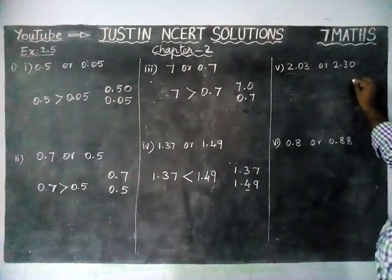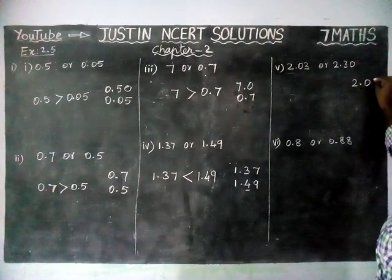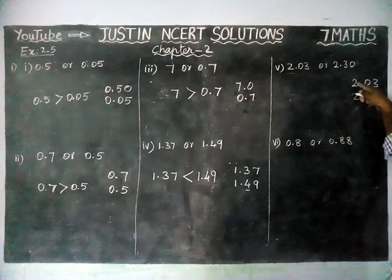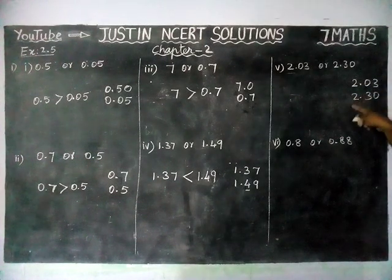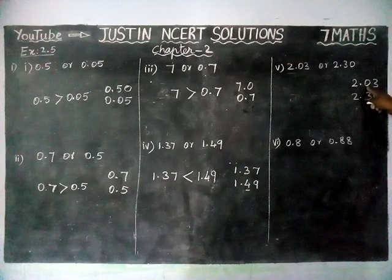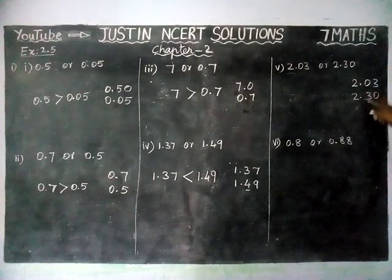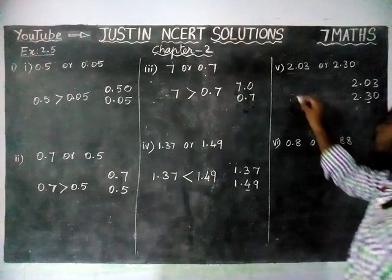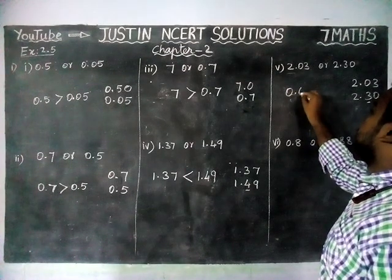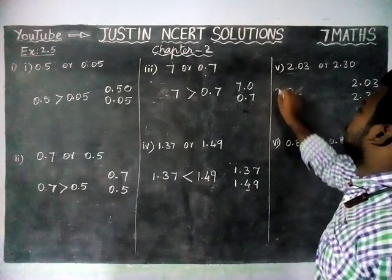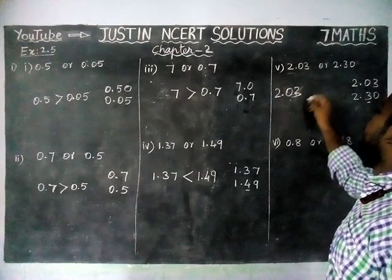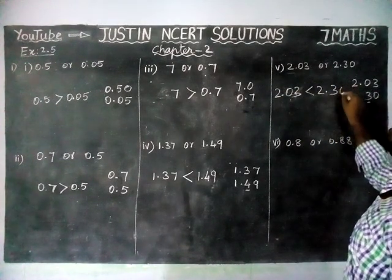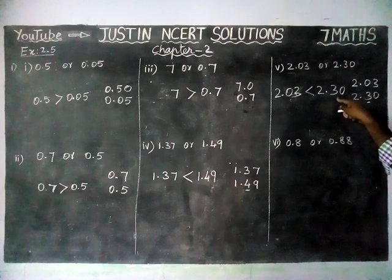Next: 2.03 and 2.30. The whole part is equal — both are 2. Looking at the decimal part, the first digit here is 0 and here is 3. So, 2.30 is the greatest value. Therefore, 2.03 is less than 2.30.